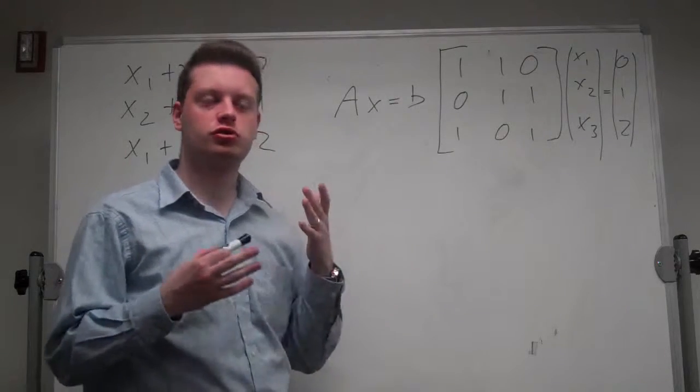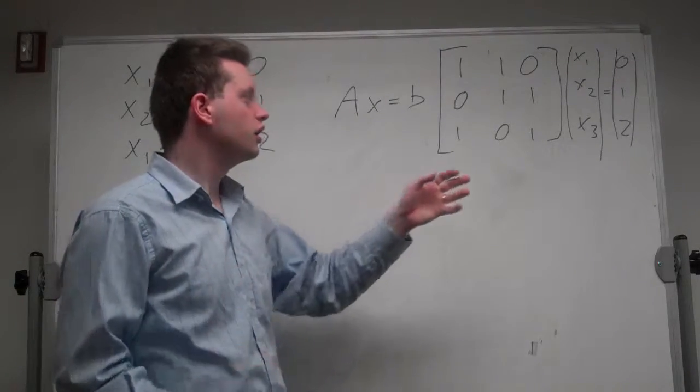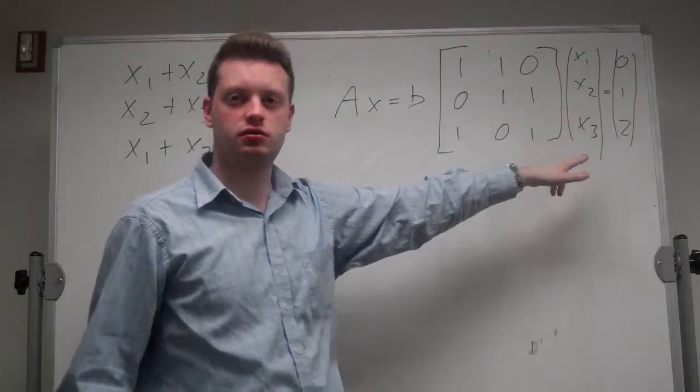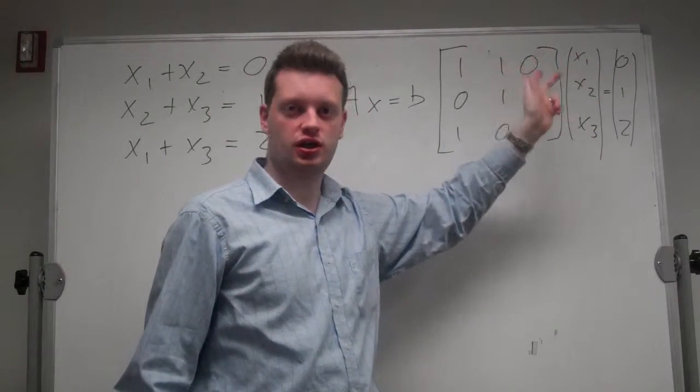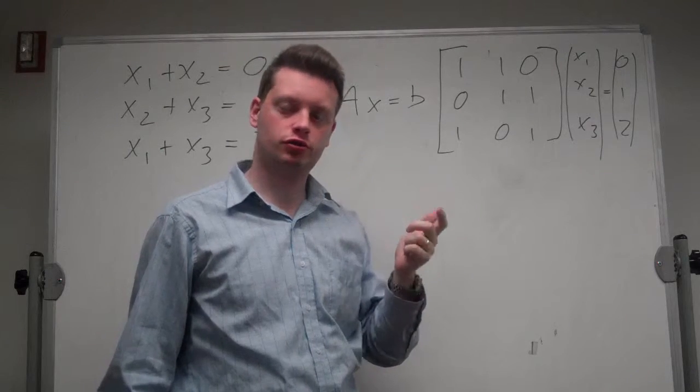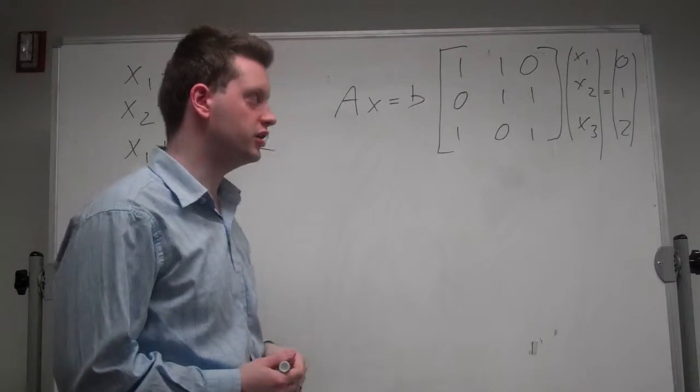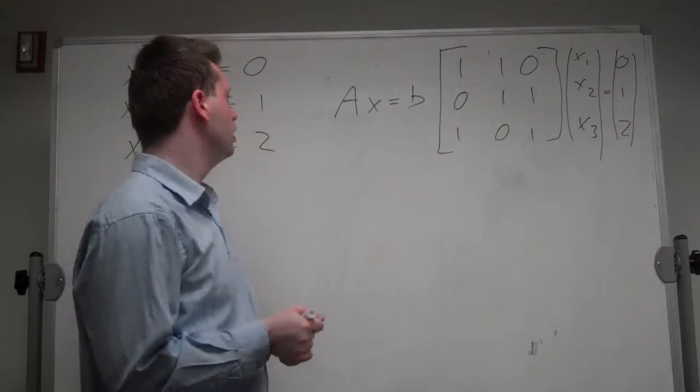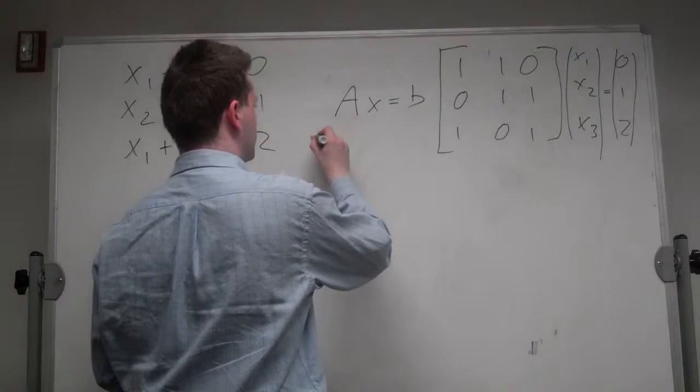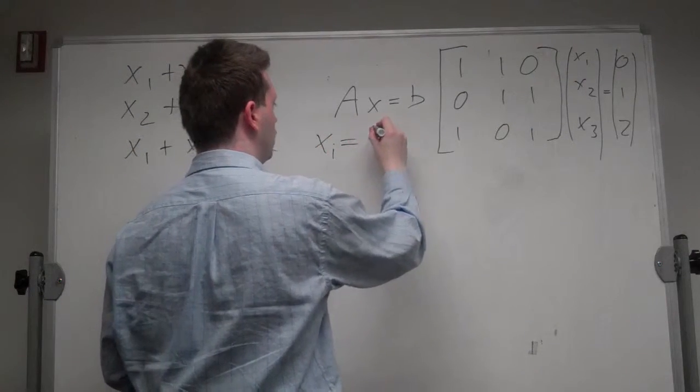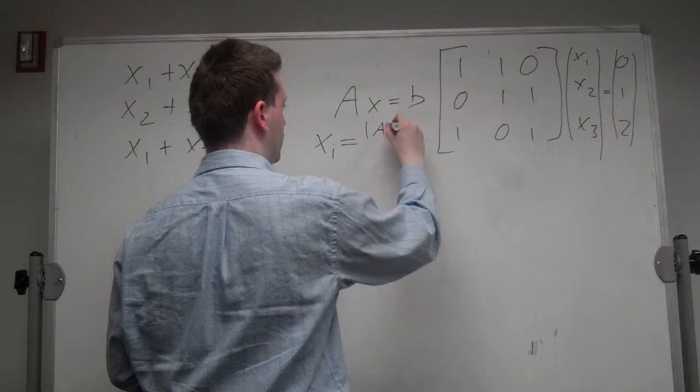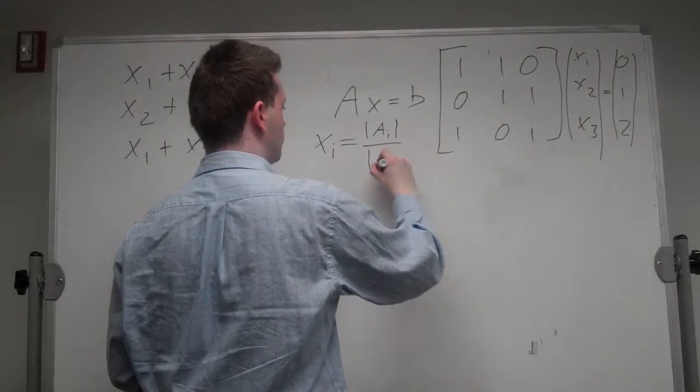Cramer's rule just states that you can get all of these x's, one at a time, by the ratio of two determinants, or determinants of two matrices. In particular, the formula says xi is equal to the determinant of Ai over the determinant of A.